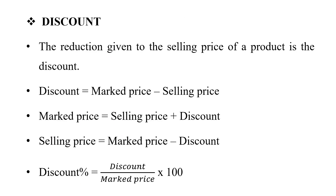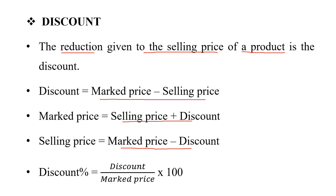Next, we will go to the discount. The reduction given to the selling price of a product is the discount. Discount is equal to market price minus selling price. Market price is equal to selling price plus discount. Selling price is equal to market price minus discount. Discount percentage is equal to discount divided by market price into 100.